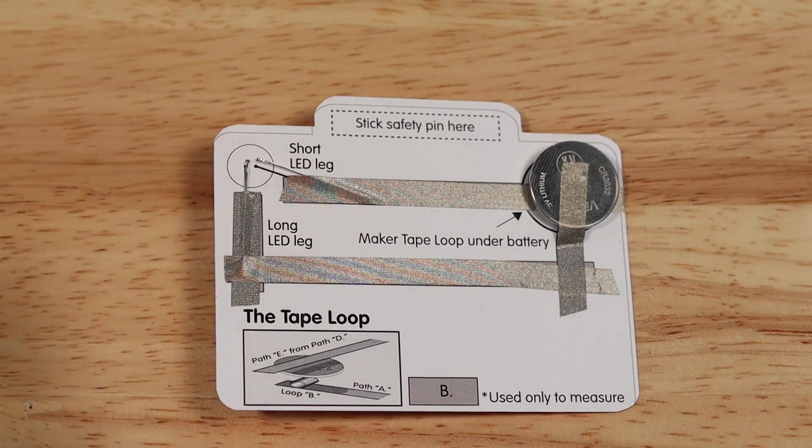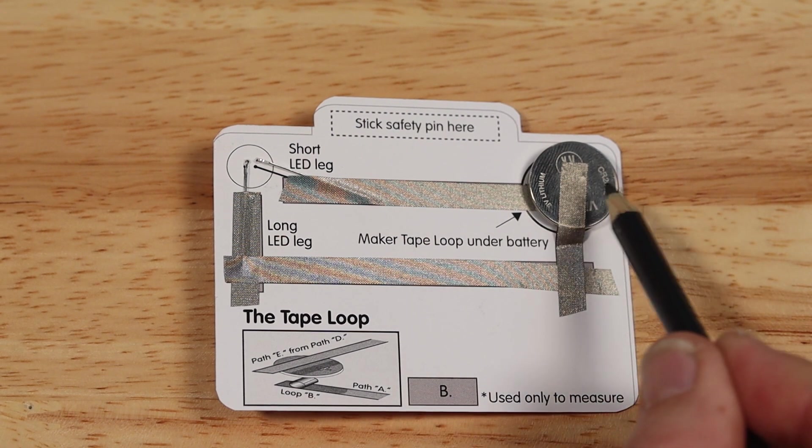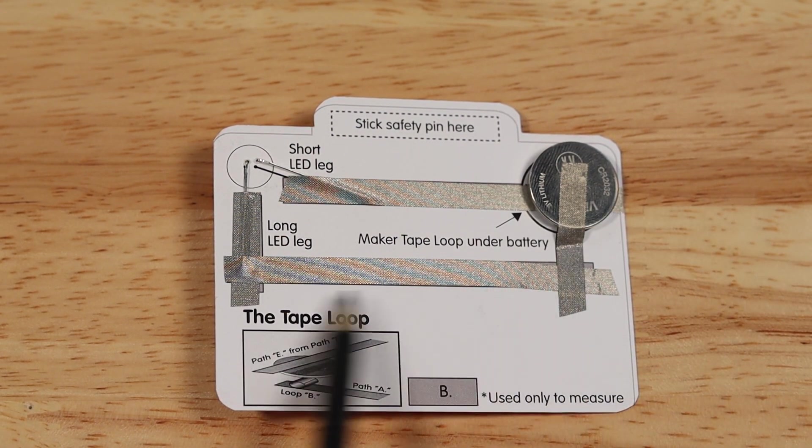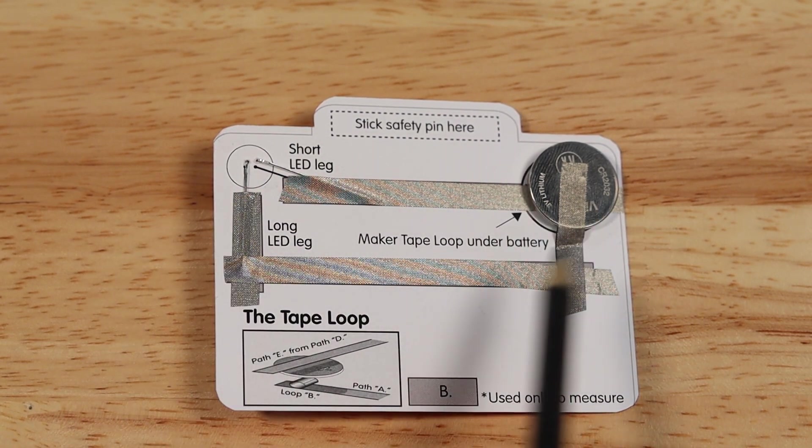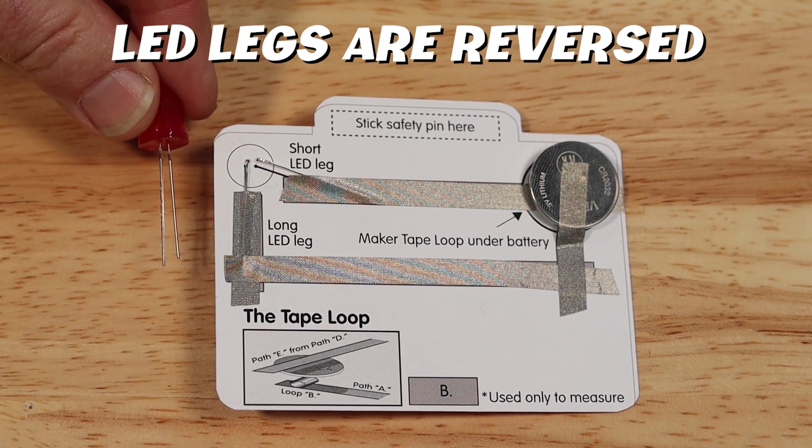This last example is actually something pretty similar. At first glance, it looks pretty good. The battery and tape loop are good. We have solid connections tape to tape and tape to the LED legs. It looks like we should have a good working complete circuit. But we have to think about the short and long legs of the LED.